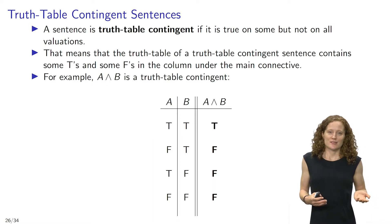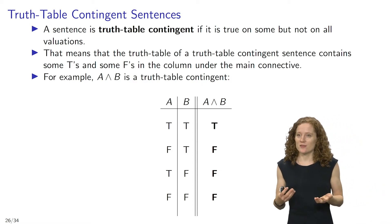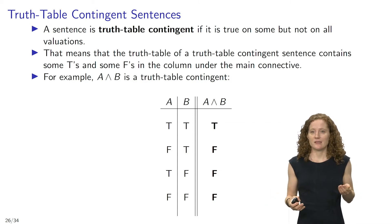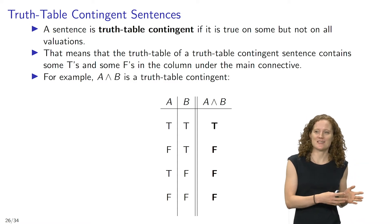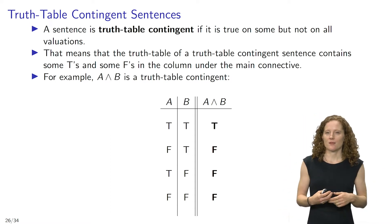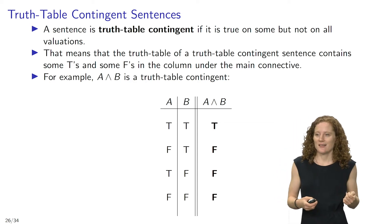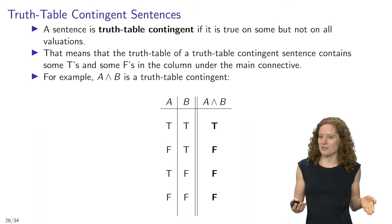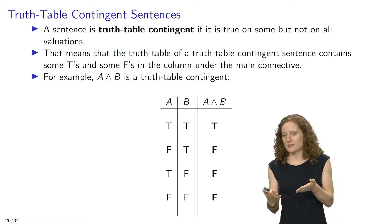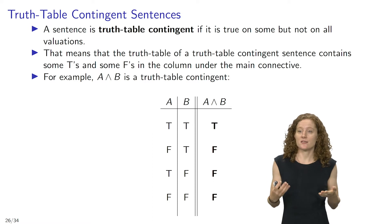Our third new semantic concept is that of a truth table contingent sentence. A sentence is truth table contingent just in case it is true on some but not on all valuations. That means the truth table of a truth table contingent sentence contains some Ts and some Fs in the column under the main connective. For example, the sentence 'a and b' is truth table contingent.